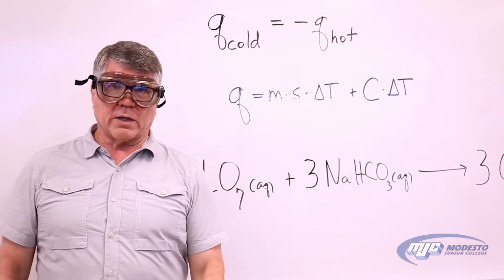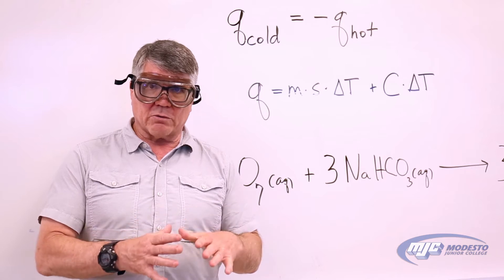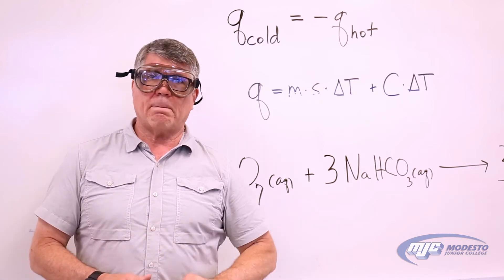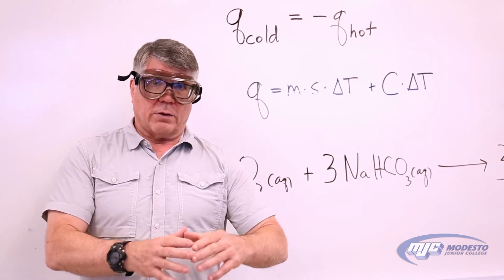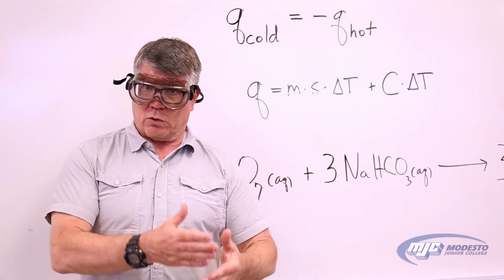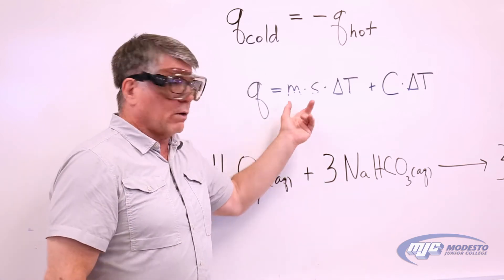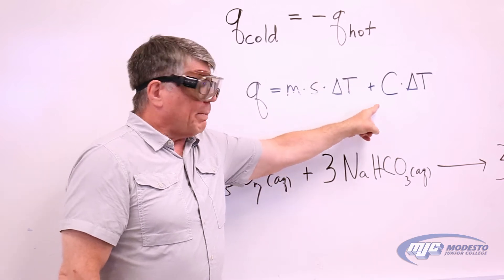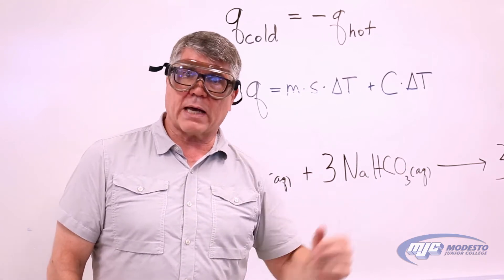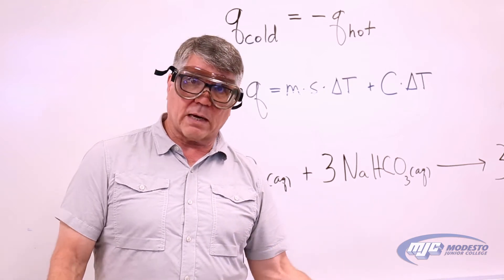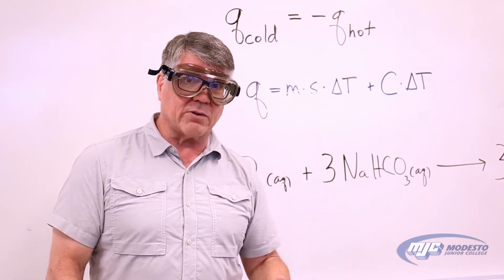In this experiment we're going to use a calorimeter, which I'll show you in a few minutes. The calorimeter itself absorbs some energy. So we take some cold water, put it inside the calorimeter, then take something hot and add it. We need to measure what's called the calorimeter constant — that's just the heat capacity, not specific heat capacity, of the calorimeter itself.